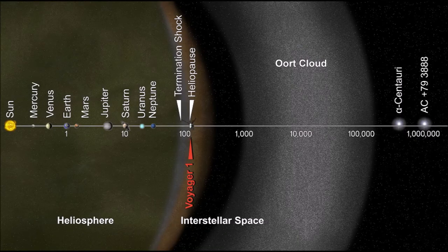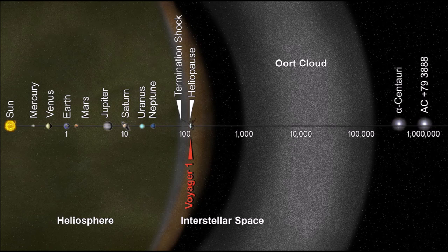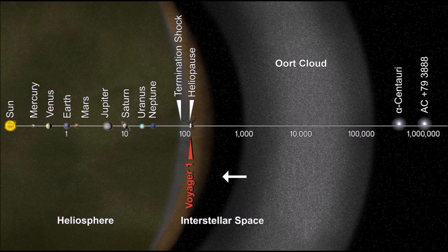The Oort cloud is so far from the Sun that it technically resides in interstellar space, however many of these objects still orbit the Sun. Some of these objects are on their way out of the solar system, some of them are on their way in, and some of them are just orbiting the Sun at a very long distance.